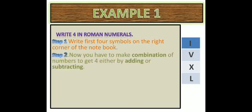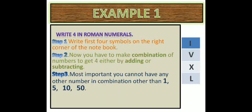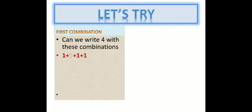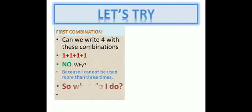Now you have to make combinations of numbers to get 4, either by adding or subtracting. Most importantly, you cannot have any other number in combination other than 1, 5, 10, or 50. Recollect all the rules. Let's try your first combination. Can we write 4 as 1 plus 1 plus 1 plus 1? No. Why? Because I cannot be used more than 3 times.